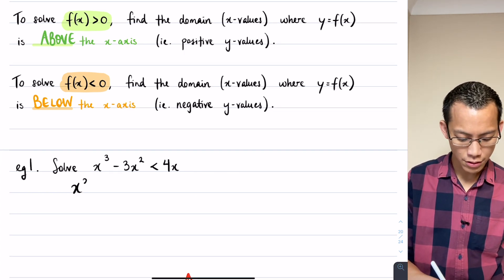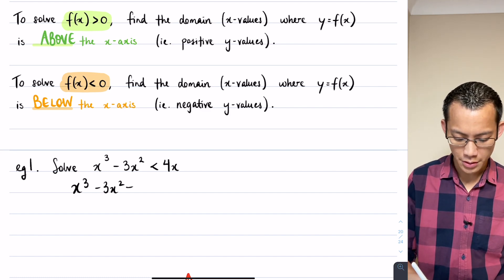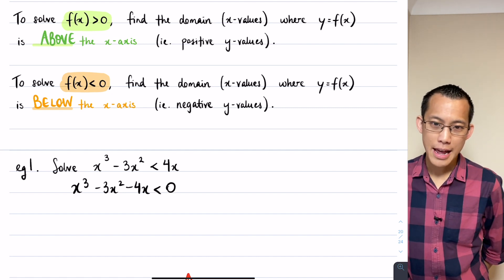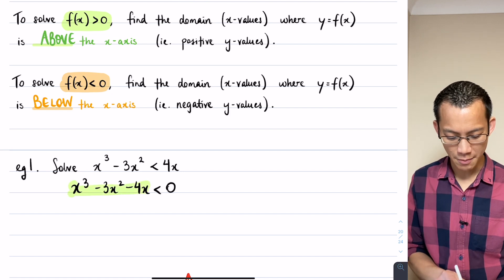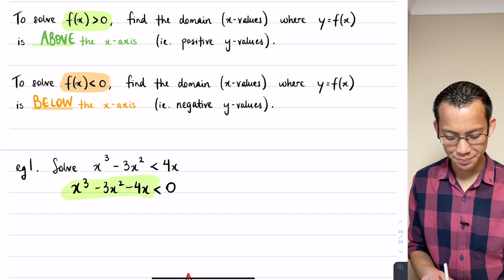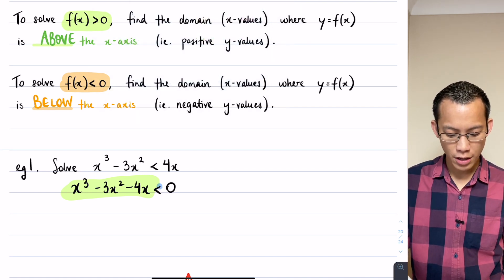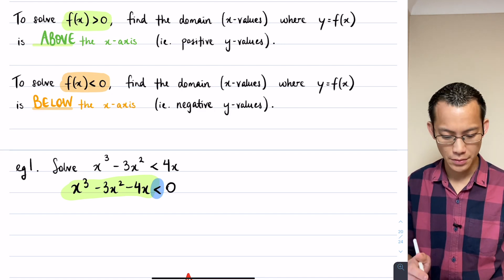In this case you can see all I need to do is subtract 4x from both sides. So that gives me this. Now I've got the left-hand side as the business end of things. I need to graph this and then search for the place where, looking at the direction of inequality, where the graph is below the x-axis, where it's negative.